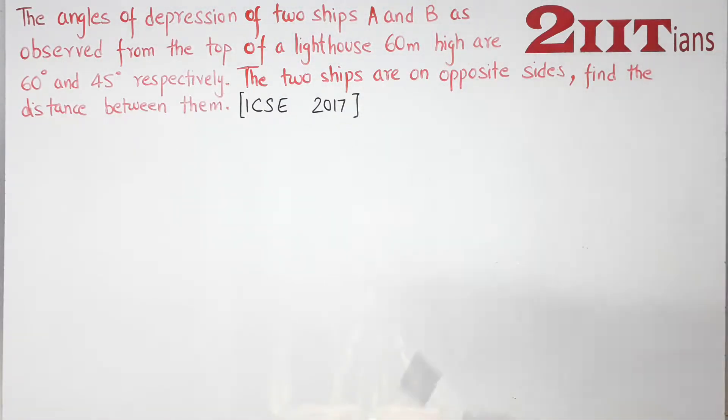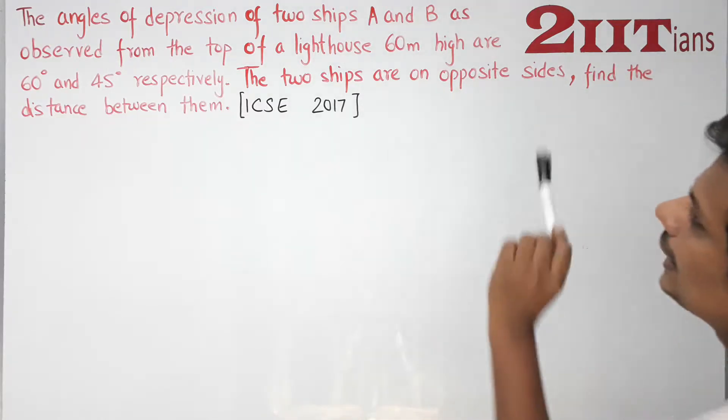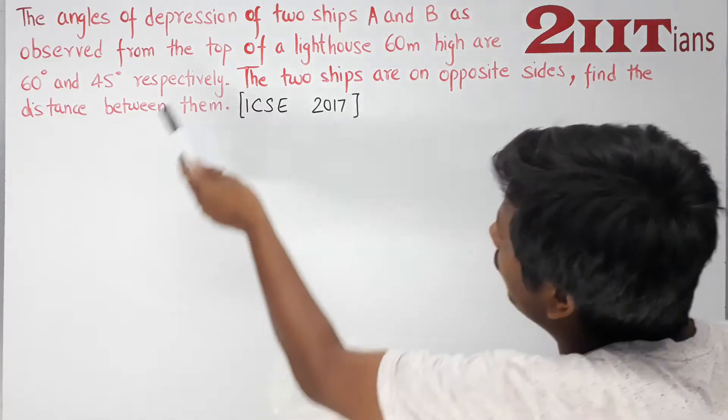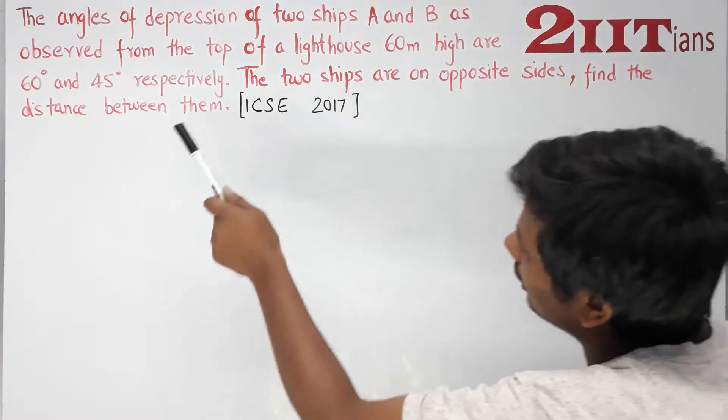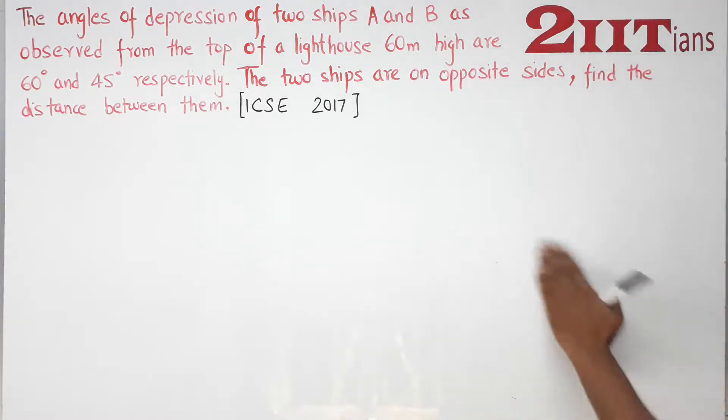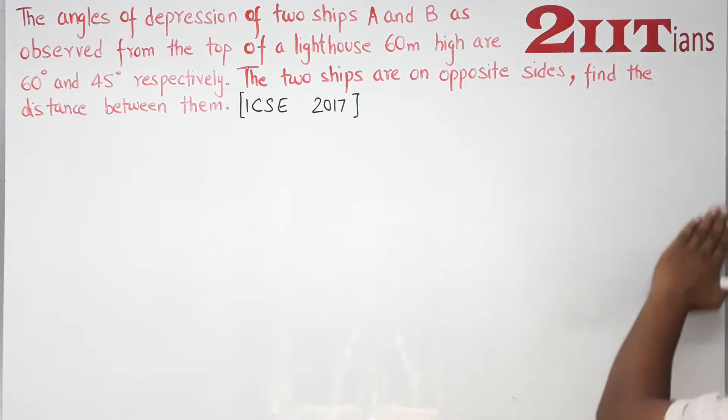The angles of depression of two ships A and B as observed from the top of a lighthouse 60 meters high are 60 degrees and 45 degrees respectively. First of all, we need to make a diagram.